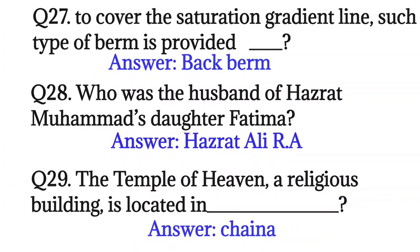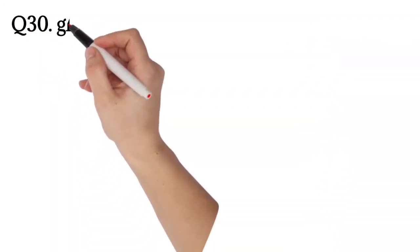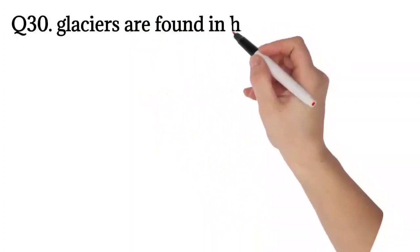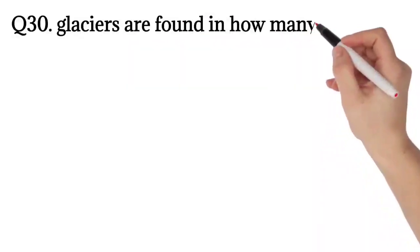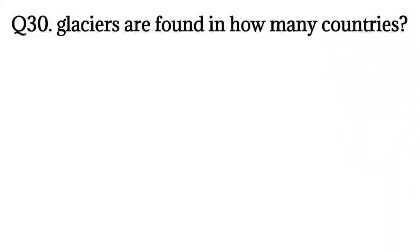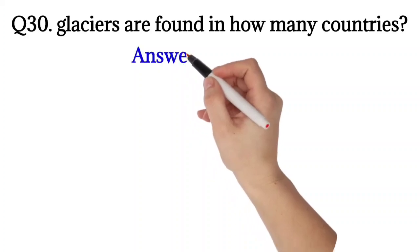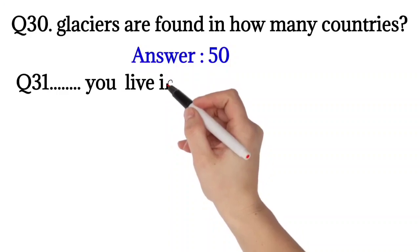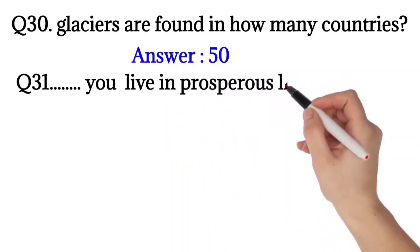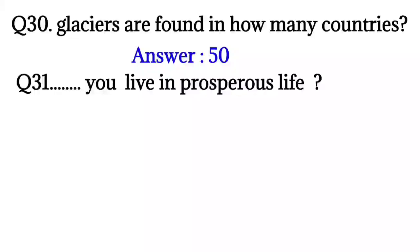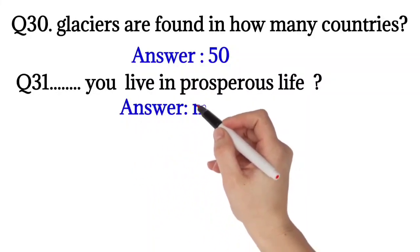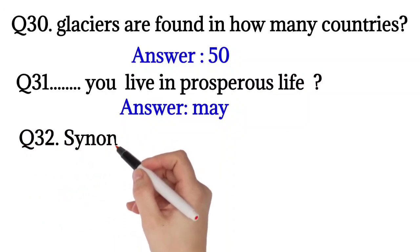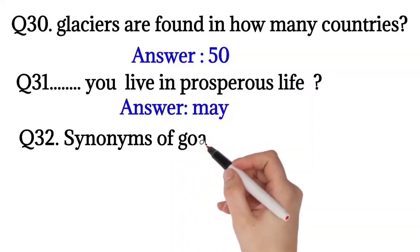Question number 30: Glaciers are found in how many countries? 50. So the right answer is 50. Question number 31: May you live in prosperous life. The answer is may you live in prosperous life.